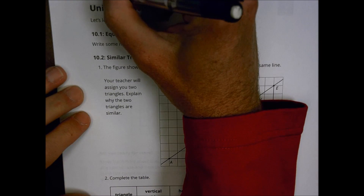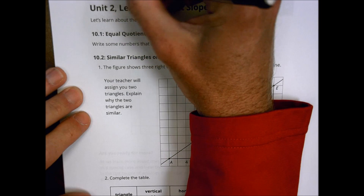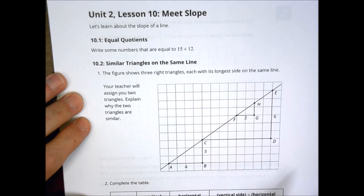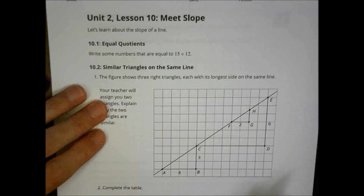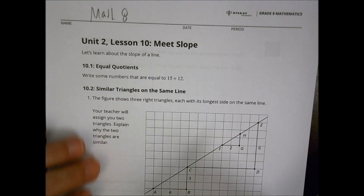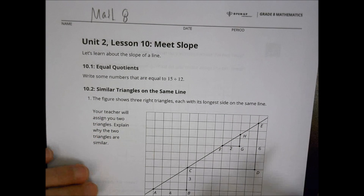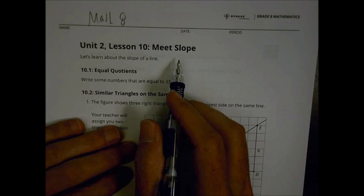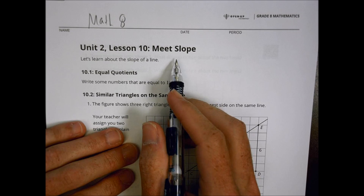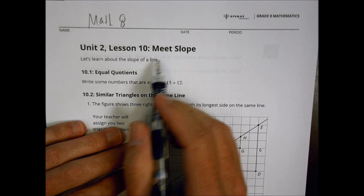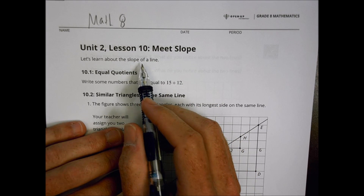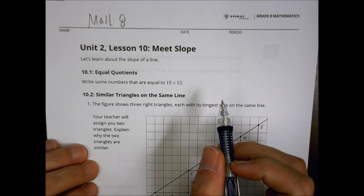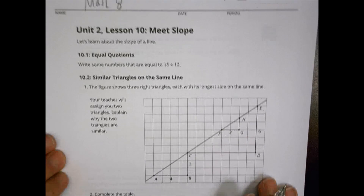Hi there. This is Math 8 and today we're looking at a review of Unit 2, Lesson 10. We're introducing ourselves to our good old friend slope — meet slope today. And we're talking about the slope of a line as we go through this lesson today.